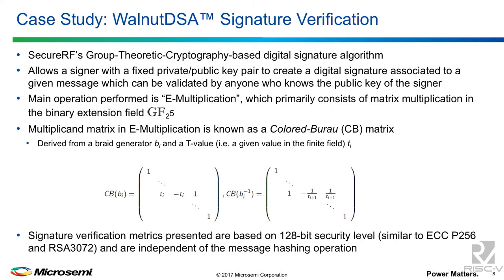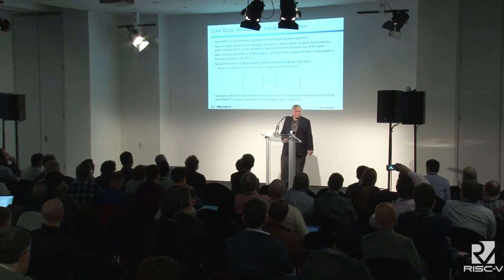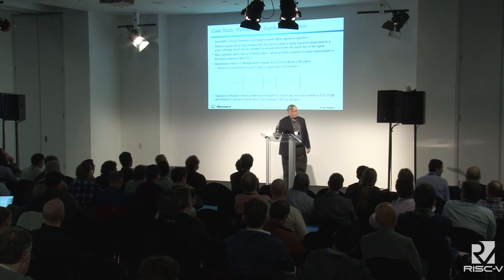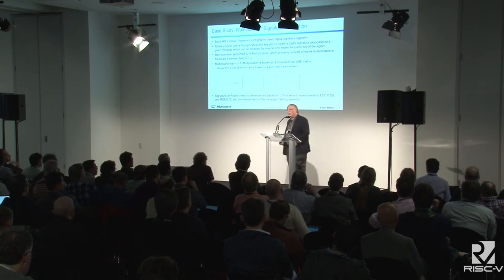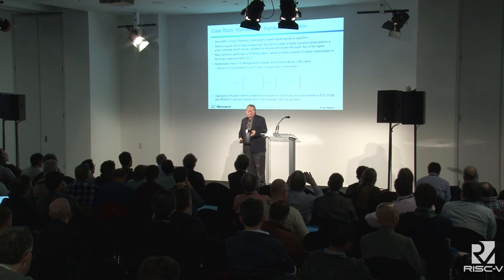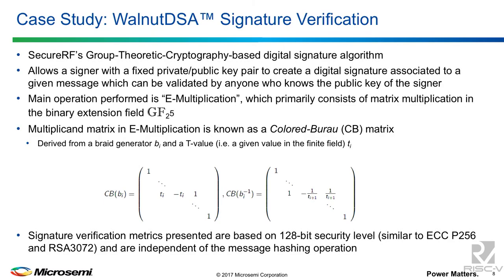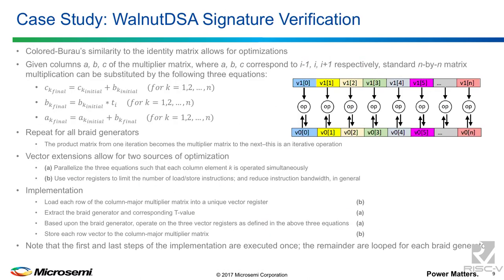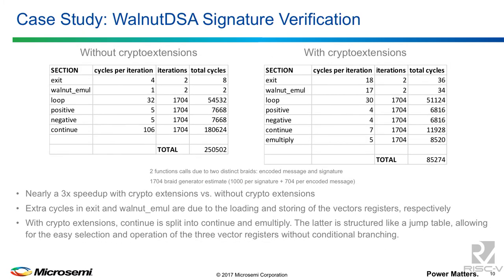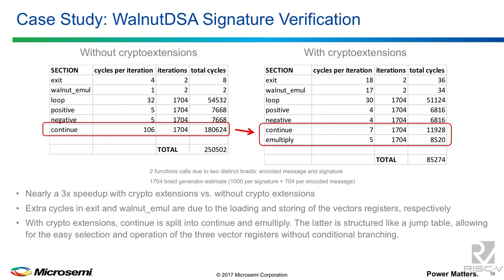Finally, SecureRF uses Galois field multiplication. By vectorizing that, they do one row in the matrix for each element — taking an 8×8 matrix and splitting it into eight vectors stored in eight different vector registers. They got a roughly three-to-one acceleration. The important part: the E-multiply, where matrix multiplication occurs, has gone from 180,000 clock cycles down to around 12,000 clock cycles by vectorizing that part of the operation.